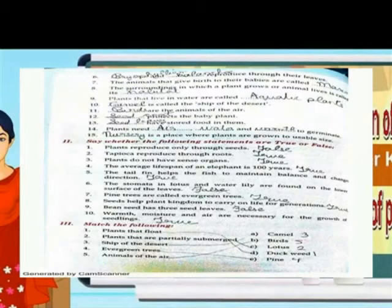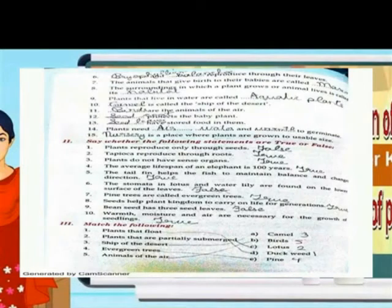True or False. Plants reproduce only through seeds — False. Tapioca reproduces through roots — True. Plants don't have sense organs — True. The average lifespan of the elephant is 100 years — True. The dolphin fin helps the fish to maintain balance and sense direction — True.